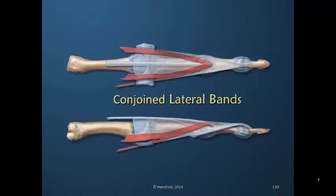The opposite is also true: when the interosseous and lumbrical muscles pull, they have some influence on the lateral band. But because of this conjoined portion, the interosseous portion shares in distributing power to the conjoined as well as the entire proximal dorsal apparatus.